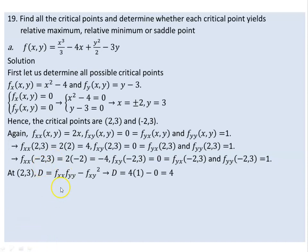This D is the discriminant that determines the type of the critical point. Using point (2, 3): Fxx is 4, Fyy is 1, Fxy is 0. Substituting these values gives D equal to 4, which is positive. According to the second derivative test, if D is positive you have two options: local max or local min, and what matters is the value of Fxx.